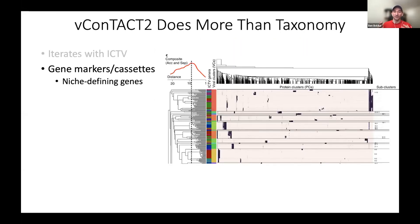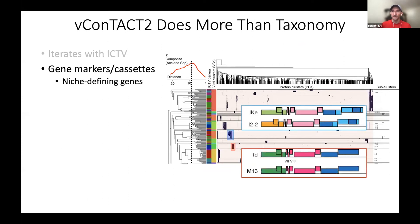VContact2 also lets you look at gene markers or gene cassettes. If you're interested in two virus groups — two VCs that have no information associated with them and don't hit anything in RefSeq — VContact2 will still cluster them and provide a high confidence prediction for that grouping. You can then go into that virus cluster and look at all the shared genes, the core genes, and the niche-defining genes, and follow up on that subset of your data for more meaningful biological questions. This provides context to work with rather than getting no matches at all.